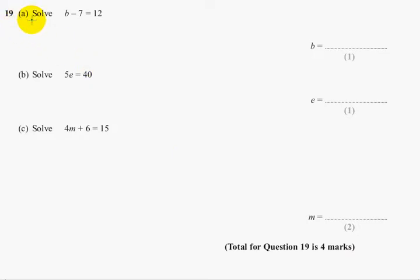Question 19, part A. Solve b take away 7 equals 12.